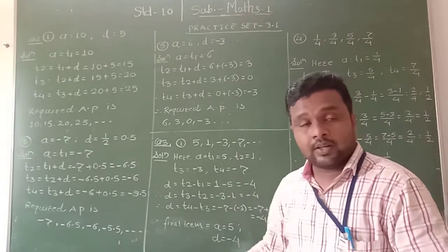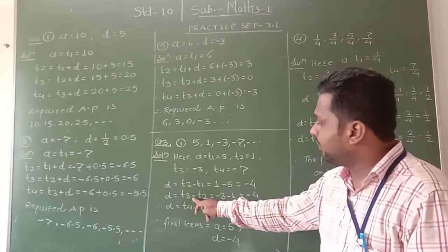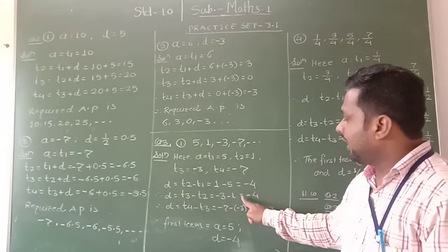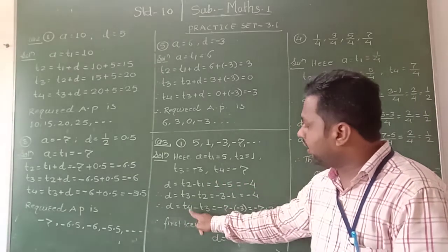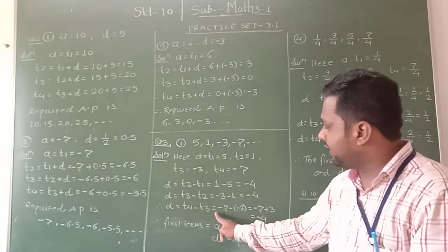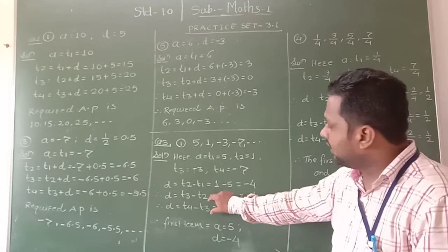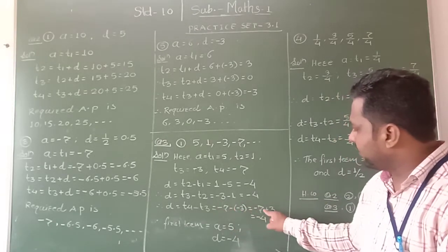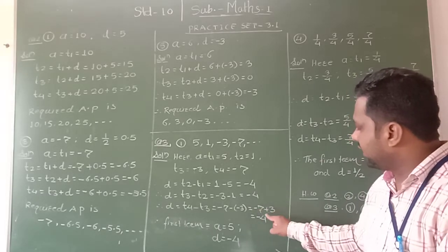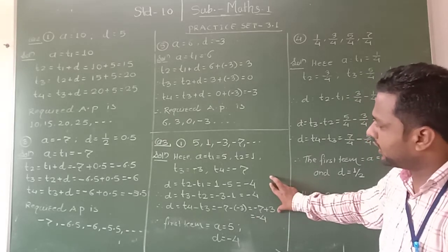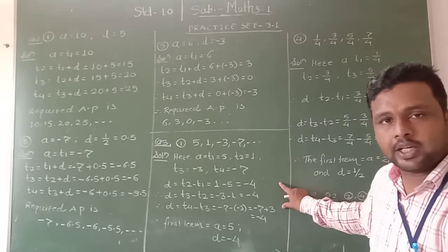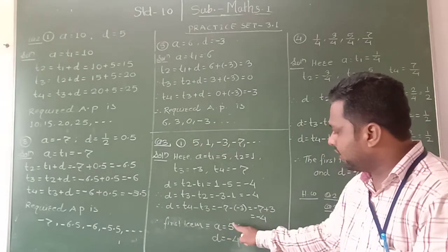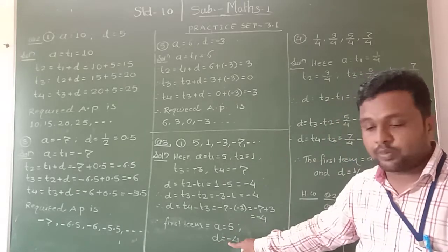Similarly, we find the difference between the next two consecutive terms. T3 minus T2 is equal to minus 3 minus 1, which again gives minus 4. Then T4 minus T3 is equal to minus 7 minus minus 3, which is minus 7 plus 3, equal to minus 4. In all cases the difference between consecutive terms is constant, and this is the common difference. Therefore, the first term A is equal to 5, and the common difference D is equal to minus 4.